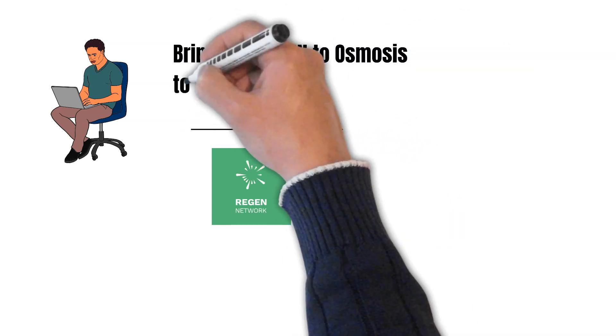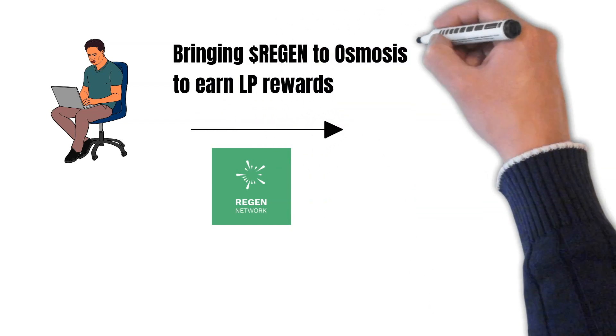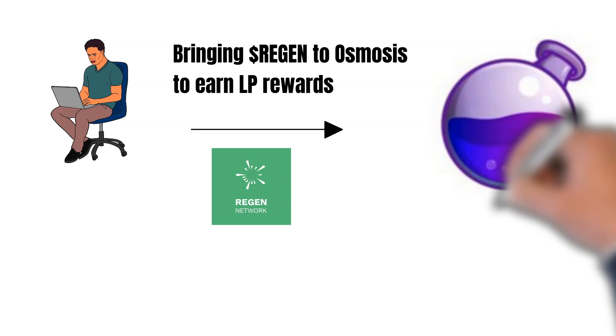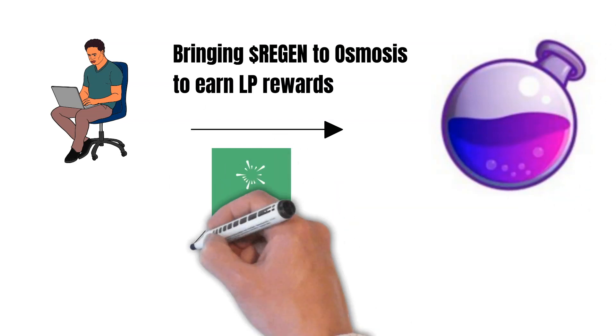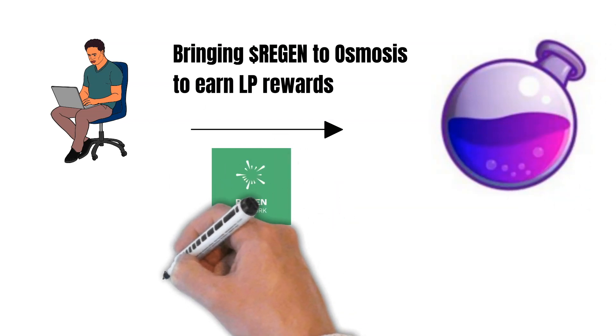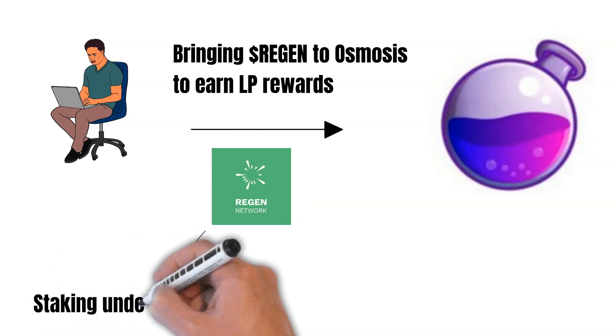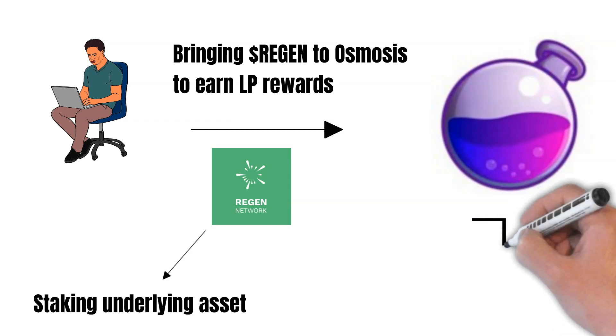Because if users bring their assets, for example, Regen, to the Osmosis chain and earn rewards for it in liquidity pools, these tokens could not be used anymore to secure the Regen chain. But with the concept of superfluid staking, this would be possible, as users would stake the underlying asset, which would be Regen in that case.